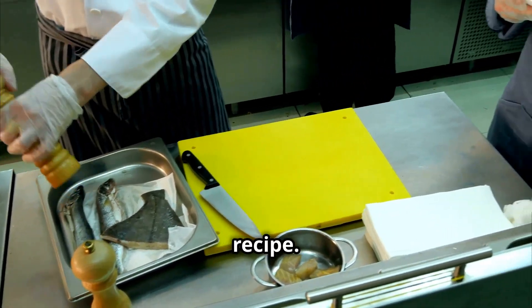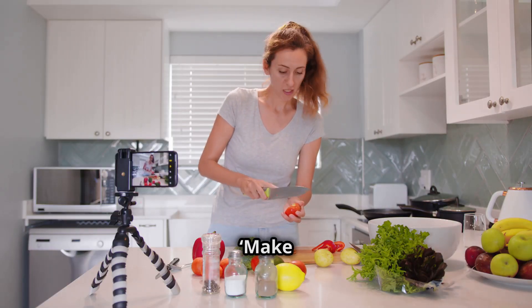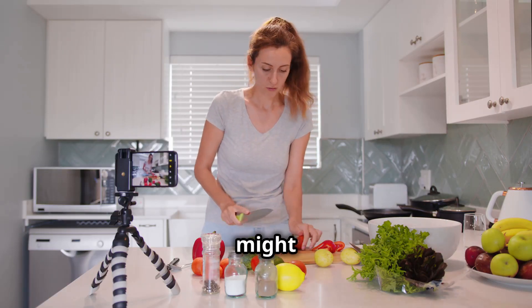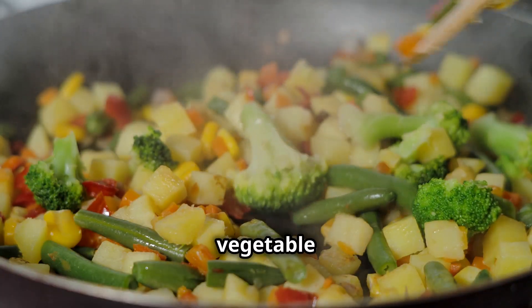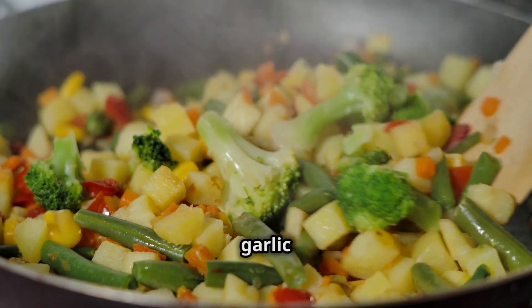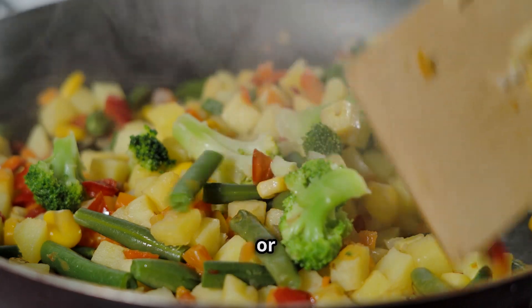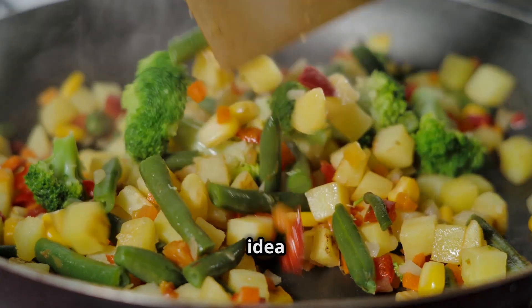Think of ChatGPT as a chef. You're the one providing the recipe. If your instructions are vague, like make something with vegetables, you might not get the dish you want. But if you say make a vegetable stir fry with carrots, broccoli and a garlic soy sauce, the chef, or ChatGPT, has a clear idea of what to do.